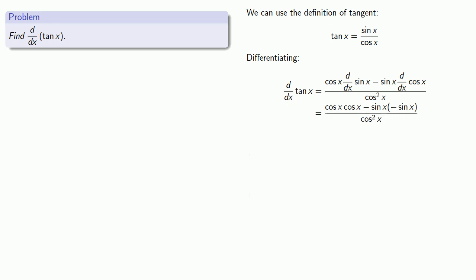However, this form is a little bit messy, so maybe we'll do a little bit of algebra and do some trigonometry. Our numerator, cosine squared x plus sine squared x, is equal to 1. So our derivative of tangent is 1 over cosine squared x.